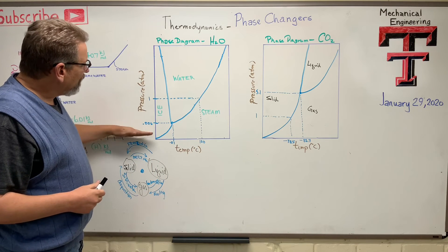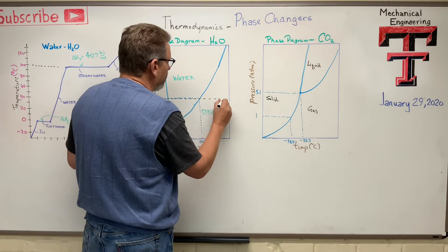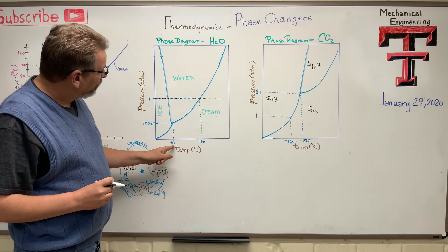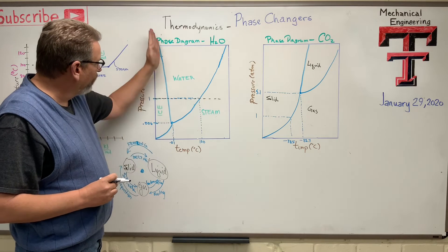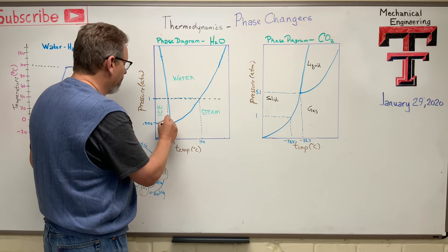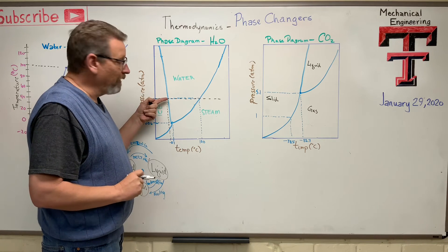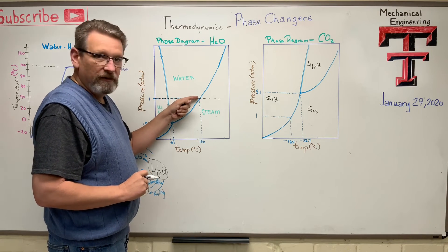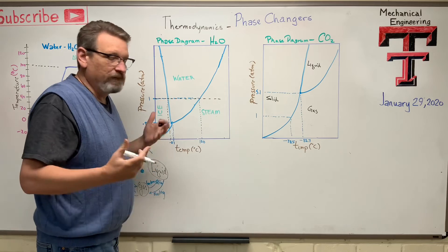At one atmosphere — sea level — as I raise the temperature, the water graph shows a nearly vertical line near zero degrees C. Above zero, ice goes into a liquid. Then at 100°C, at one atmosphere, it turns into steam. These lines on the diagram represent equilibrium between states.